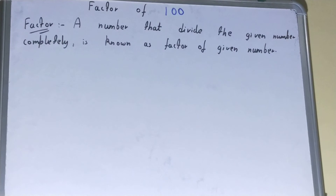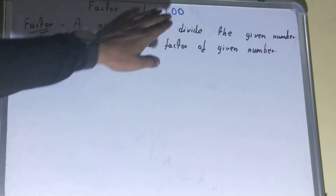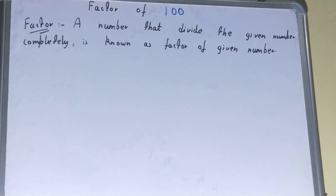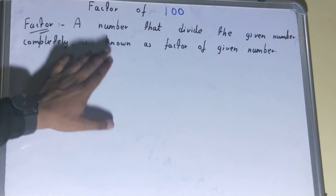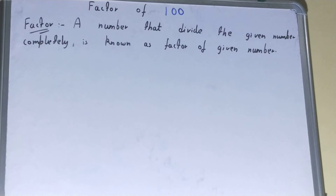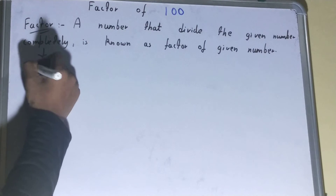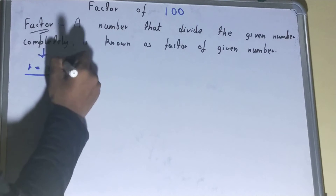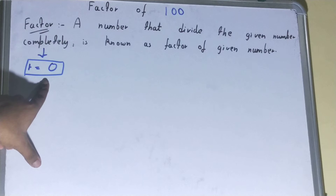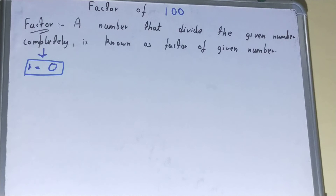In this video, I'll be helping with how you can find out all the factors of the number 100. Before coming to our main topic, it's important to know what a factor is and how to check that a particular number is a factor of a given number. A factor is a number that divides the given number completely, meaning the remainder is zero.